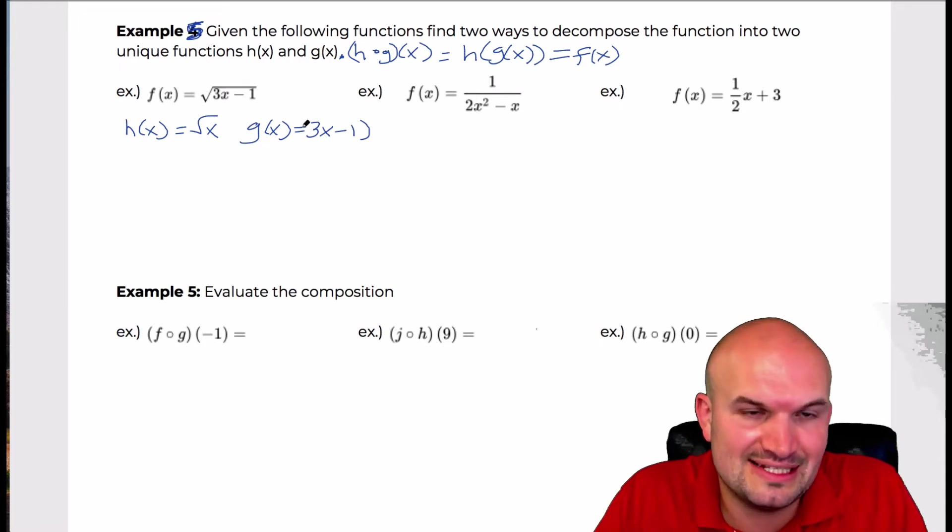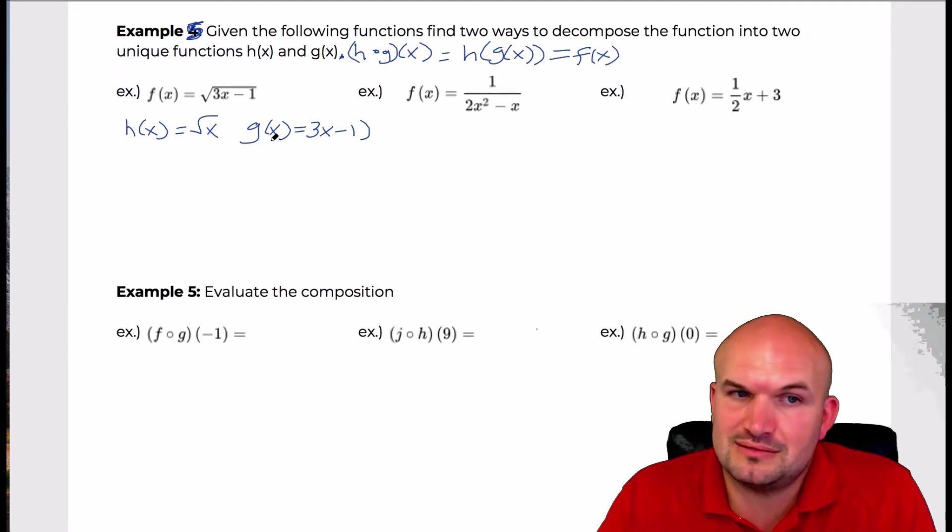Well, what if I had h of x as the square root of x and then I said g of x equaled 3x minus 1? And just think about that. If I take g of x and plug it into h of x, I'm going to get f of x, right? I mean, that's, you can see exactly how that works.